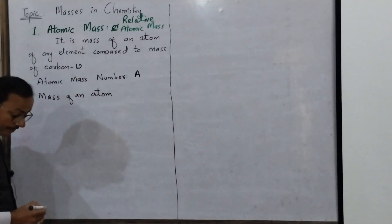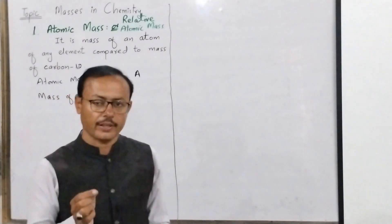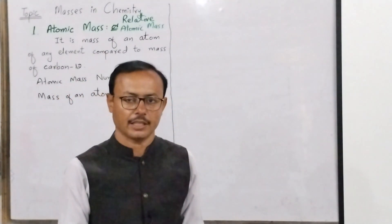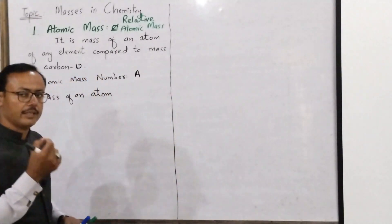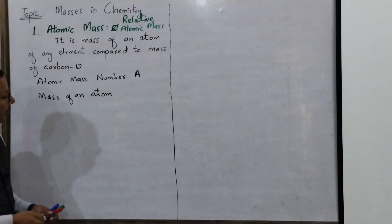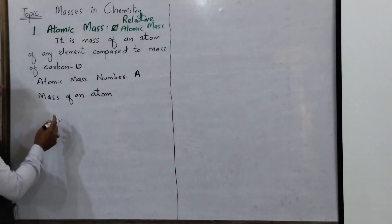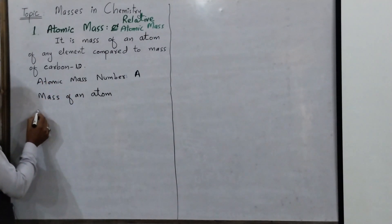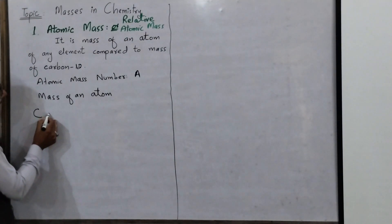Students, atomic mass — as the word shows — is the mass of an atom. Now, an atom is a very tiny particle, a very small particle. Therefore, to measure its mass is a very difficult task. So chemists and scientists started a method: that you compare the mass of any atom with the mass of carbon — specifically carbon's isotope C-12.